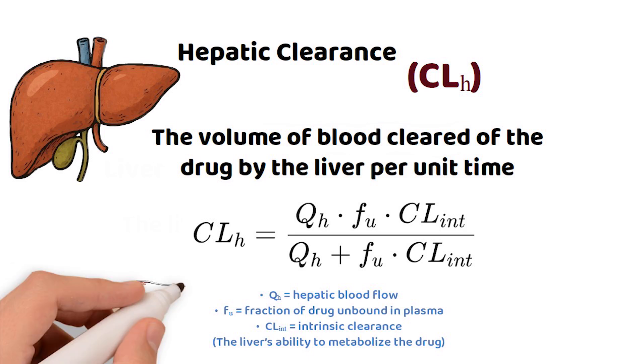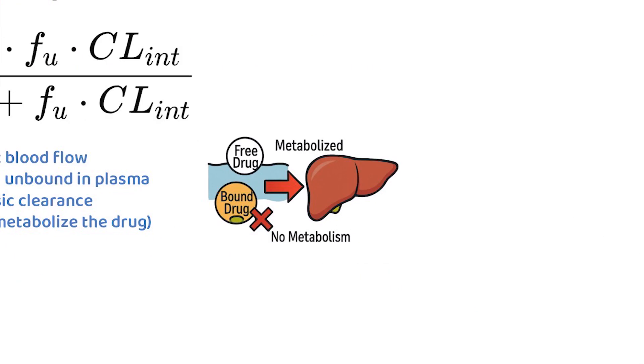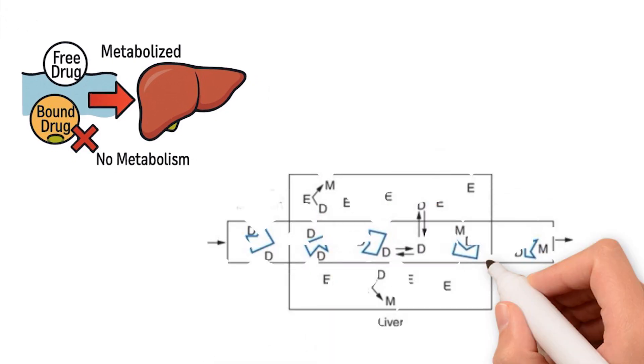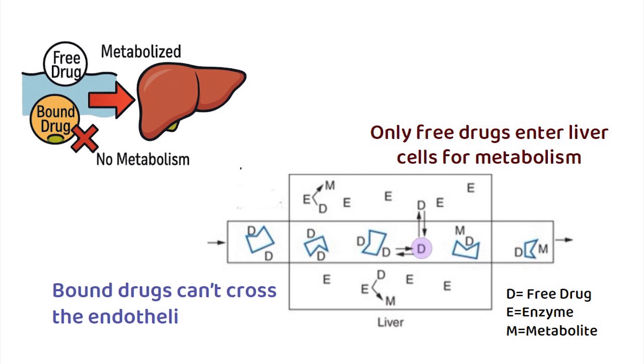This equation balances how fast drug arrives at the liver, which is governed by the hepatic blood flow, how much is free to be metabolised. And that's because only free drug molecules, not those bound to proteins, can diffuse into hepatocytes for metabolism as protein drug complexes are too large to pass through hepatic cells.